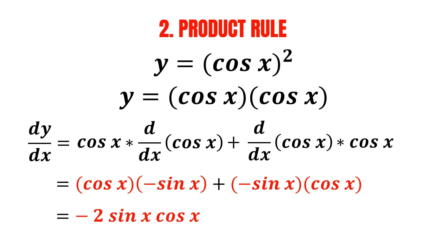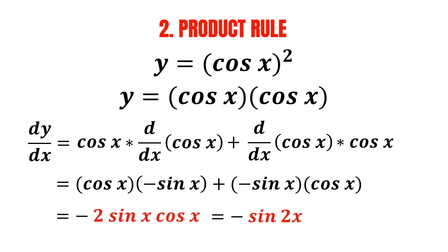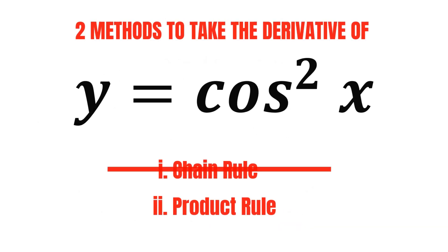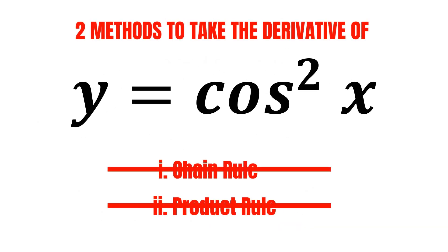However, just like before, we can further simplify this expression. According to the double angle formula, 2 sine x multiplied by cosine x is also the same as sine of 2x. And we've got our final answer — that's how we take the derivative of cosine squared x by using the product rule.